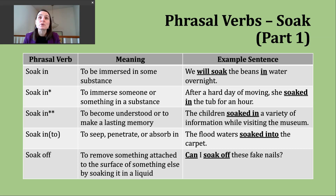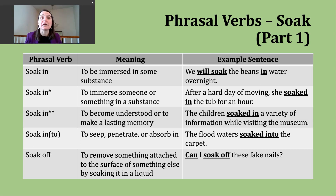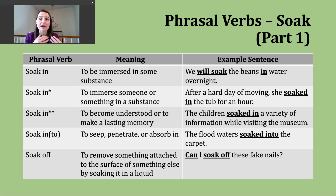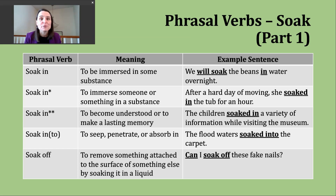The next phrasal verb is soak off. This is used when we put something in liquid in hopes that something else will be removed — something that had been previously attached. Getting something really wet can help loosen something. For example: can I soak off these fake nails? Some people wear acrylic nails with a particular glue, and they can put their hands in a particular liquid to loosen that glue and remove the nails.